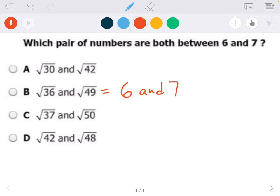So I'm just going to go through each one and find out the square roots of each of these. So the first one, the square root of 30 is 5.48, and the square root of 42. I already know that this can't be the answer choice because that first one is not in between 6 and 7, but the square root of 42 is 6.48.